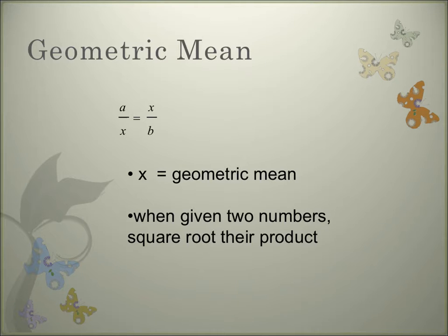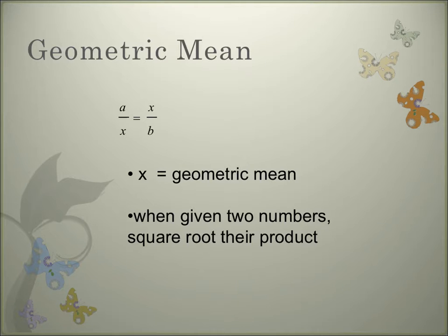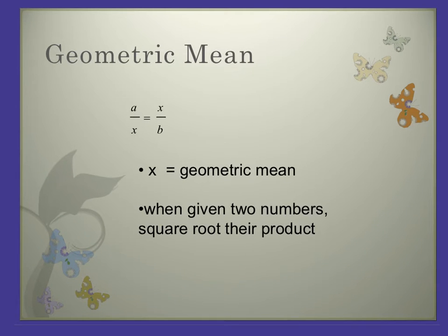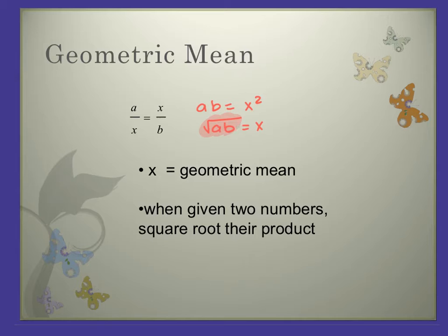A geometric mean is found by square-rooting the product of two numbers. If I give you two numbers and ask for the geometric mean, you multiply them together and put the result under a square root. It often comes from a proportion with a repeated term, like a/x = x/b. Cross-multiplying gives a times b equals x squared, so x equals the square root of a times b. We call this the geometric mean.